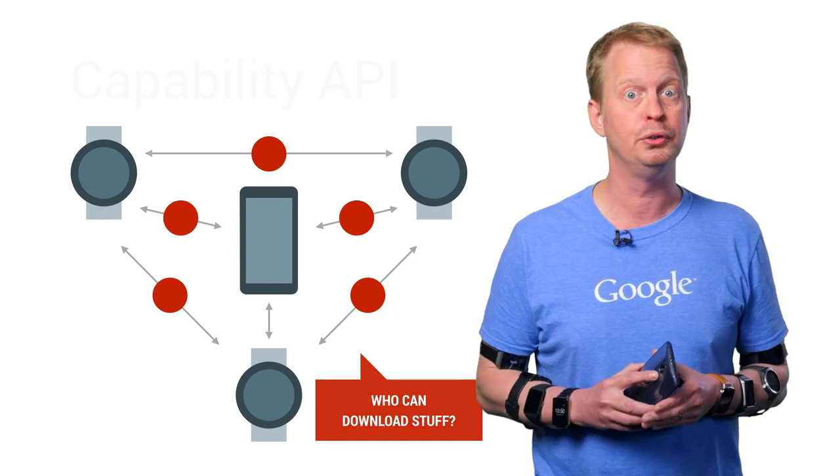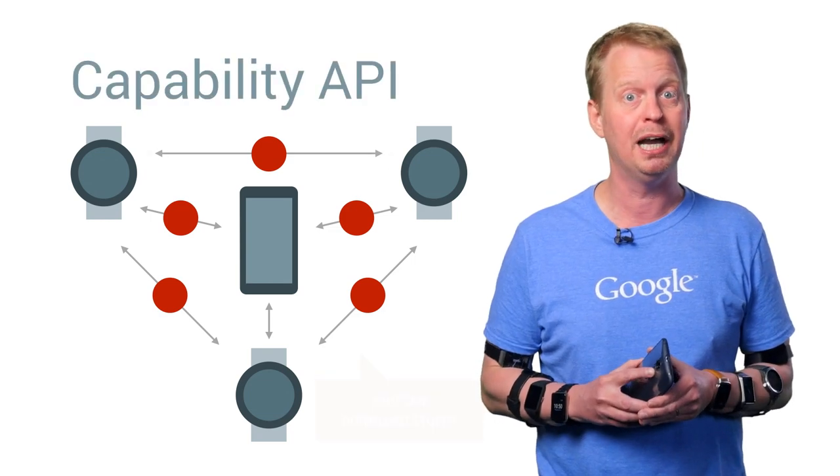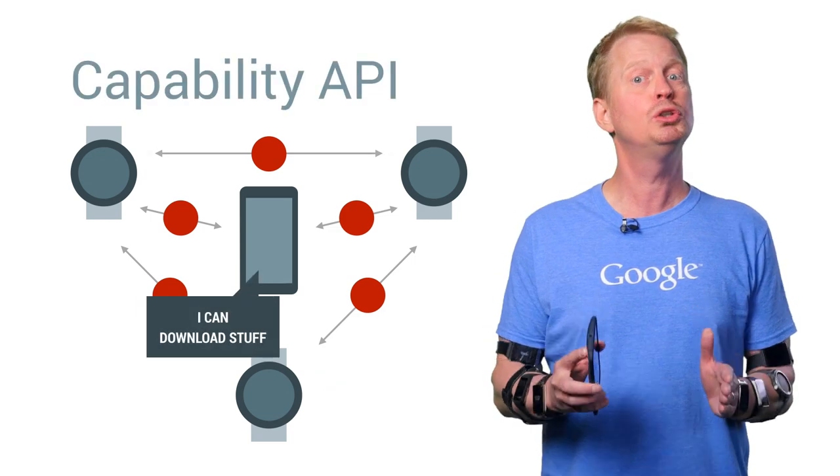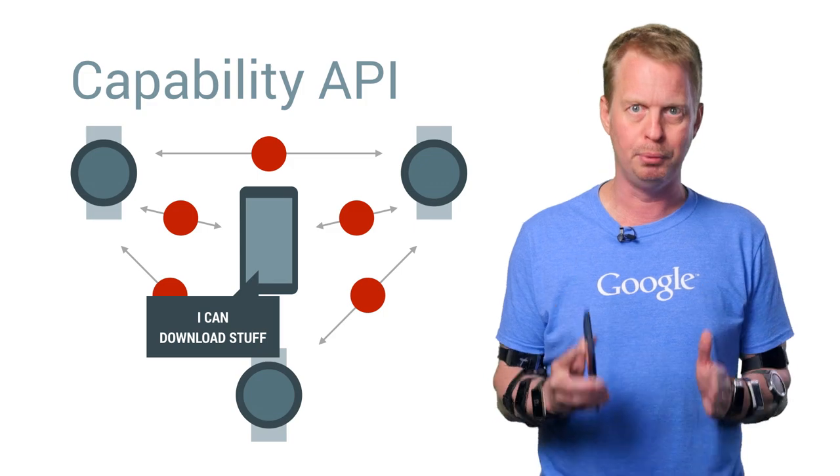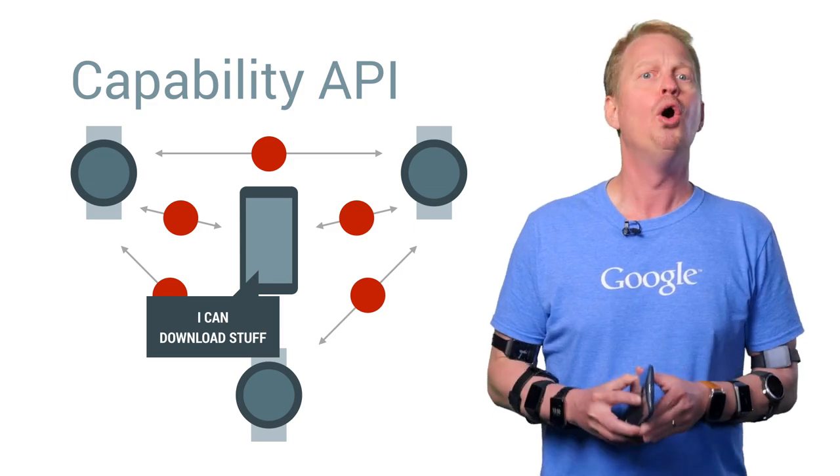That's the job of the new Capability API, which allows your app to locate nodes supporting a given capability.